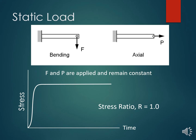The very first thing is the static load. If you see the pictures, the first one is the beam which has force F acting on it — this is considered as bending. The second one is force P acting axially, so this is called axial loading. The forces F in bending and P in the axial direction are applied and remain constant onto the structure. This graph shows the stress increasing with time, and the ratio for this stress is one.